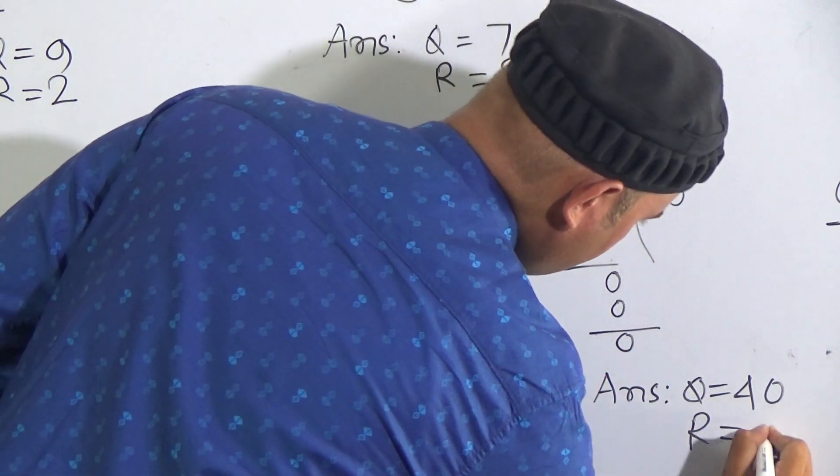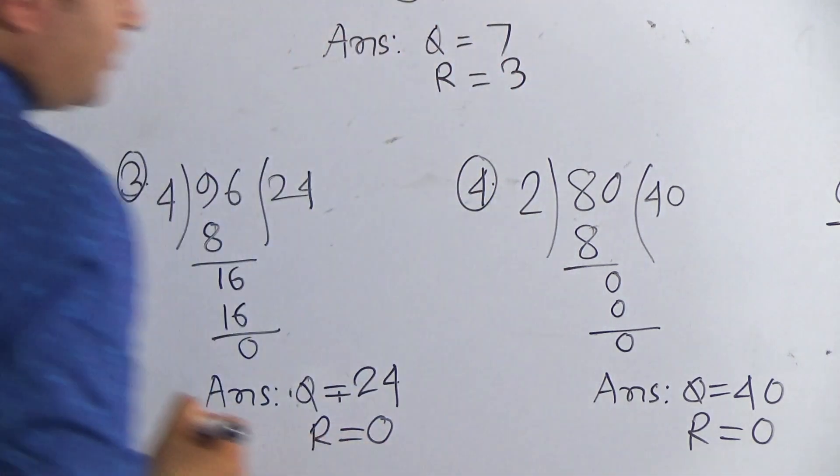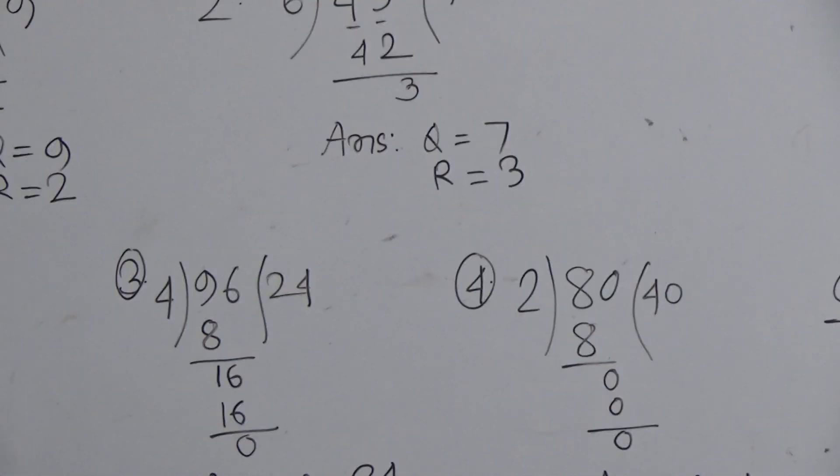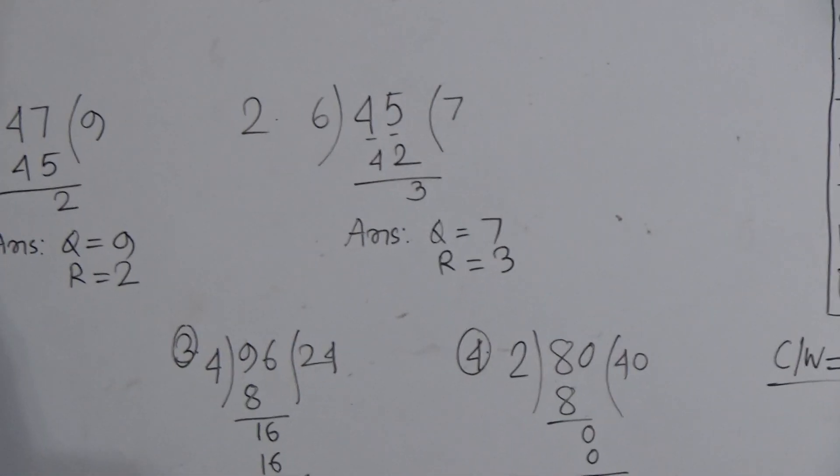So the answer is quotient 40 and remainder is 0. My dear students, hope you understood how can we divide. Practice it at your home more and more. See you soon and till then Allah Hafez.